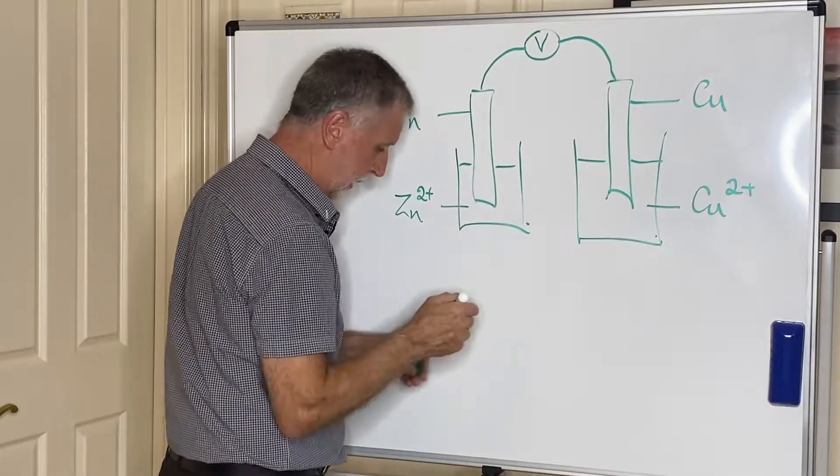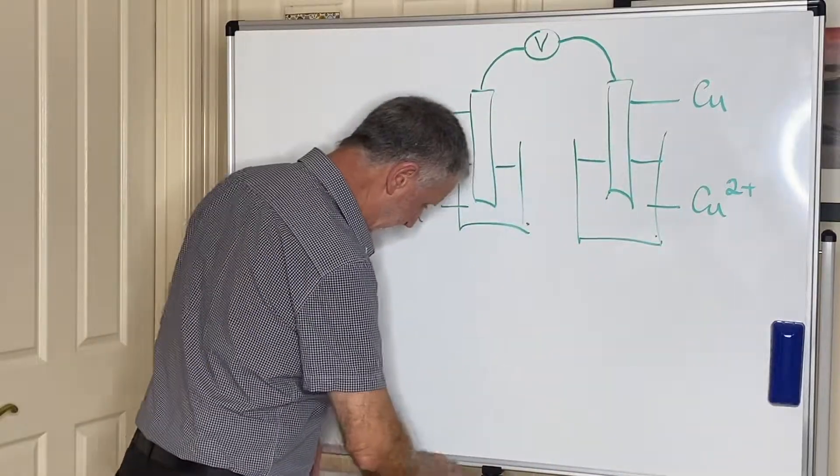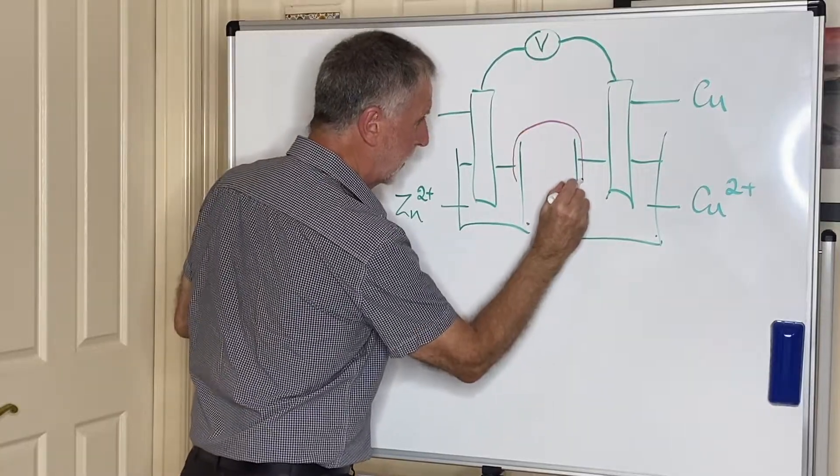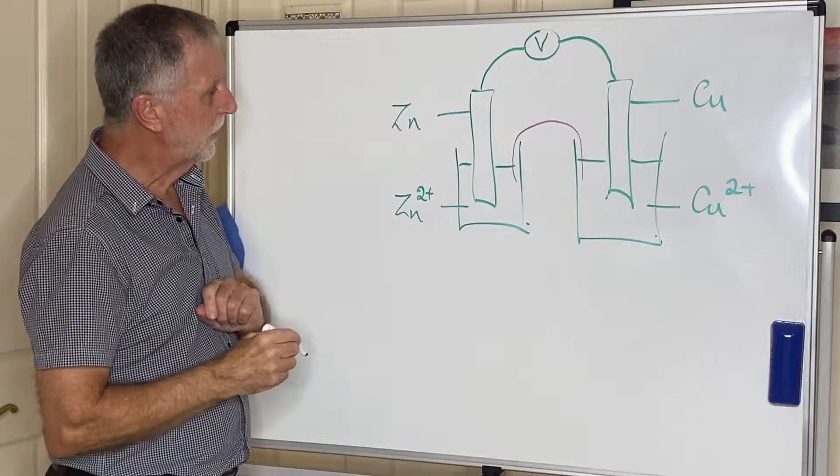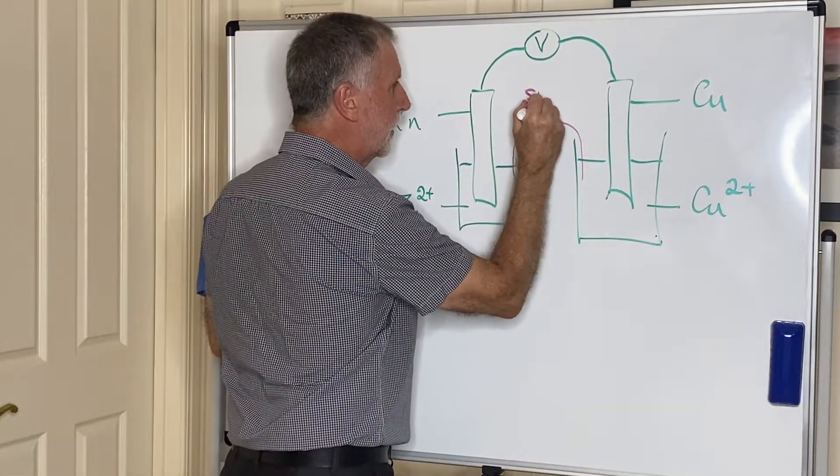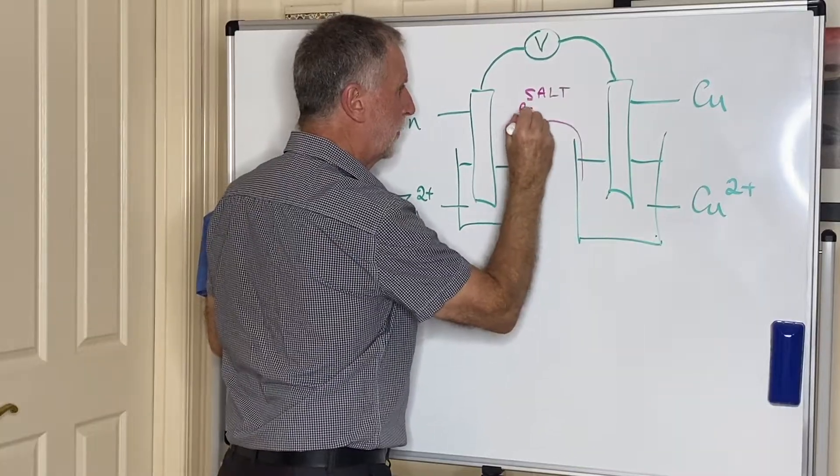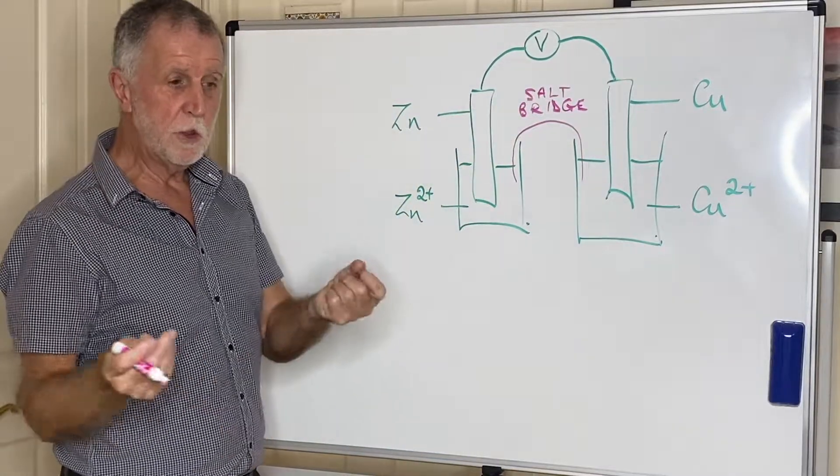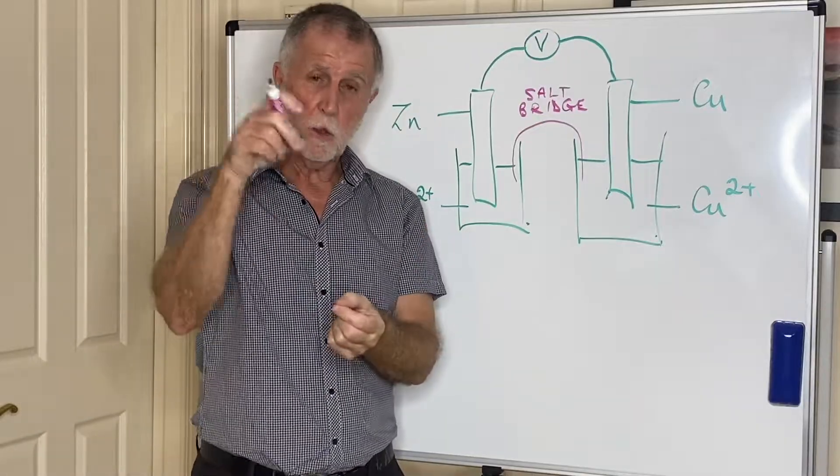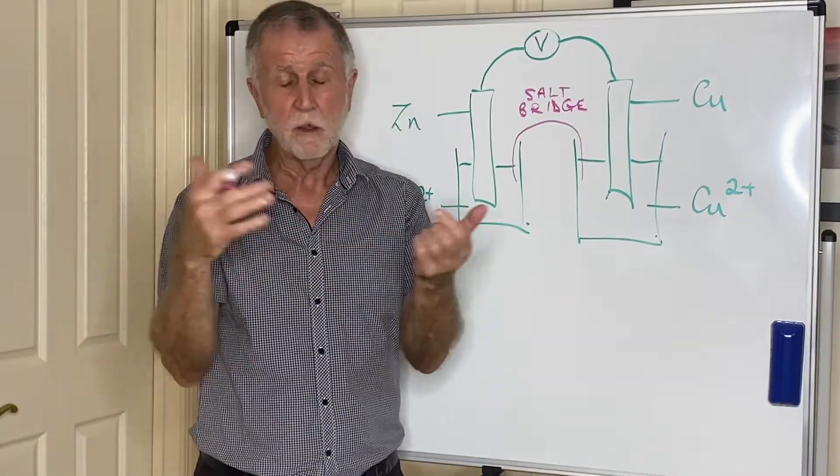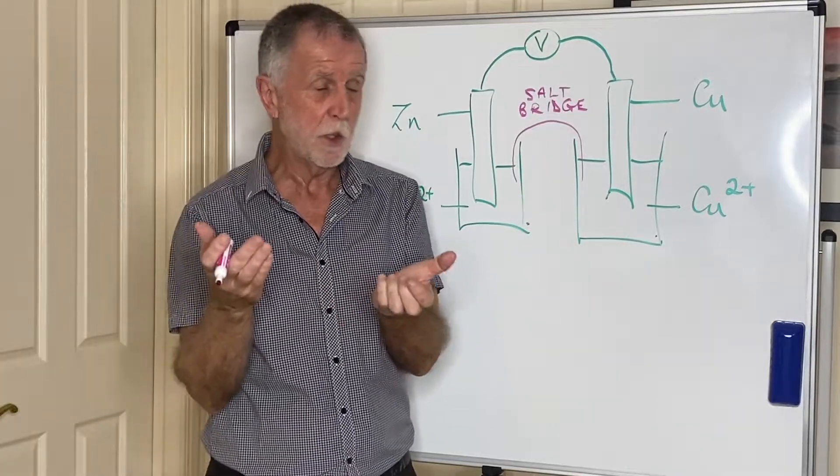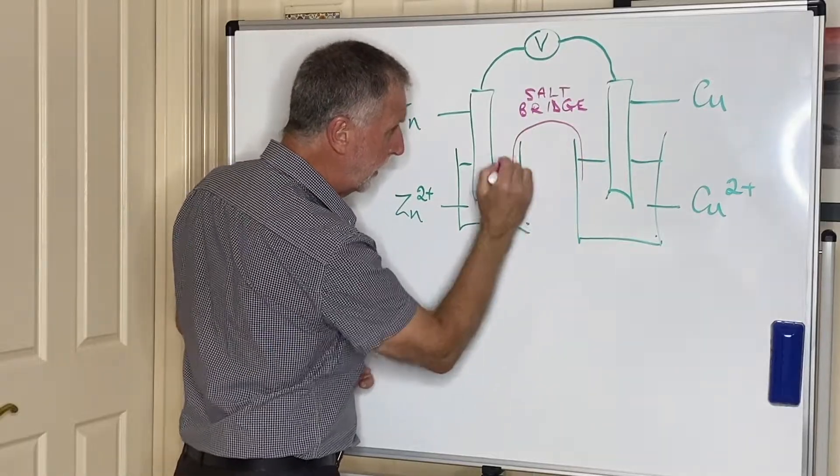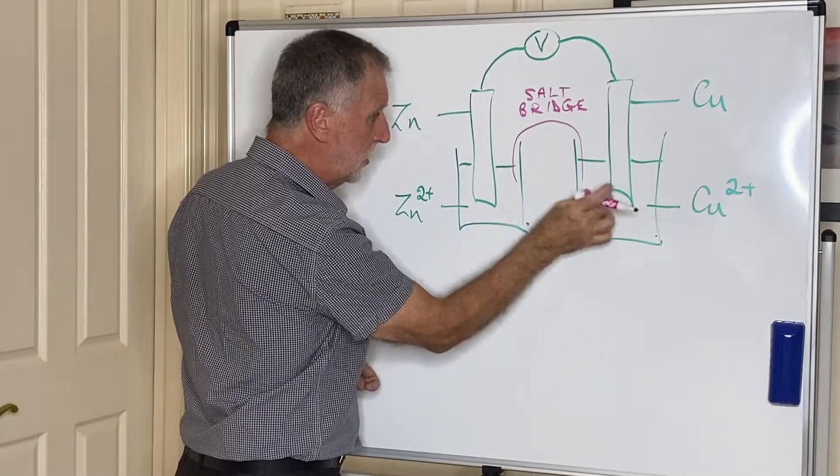However, at the moment there's a gap there, and of course electricity can't flow unless the circuit is complete. So what we need here is something to complete the circuit, and that represents something called a salt bridge. It literally is an ionic salt, which could be as simple as a piece of filter paper dipped into a solution of sodium chloride or another ionic salt. As long as it's got ions, it doesn't really matter what it is. That then goes into each solution, and ions can travel in between through the salt bridge into both beakers.